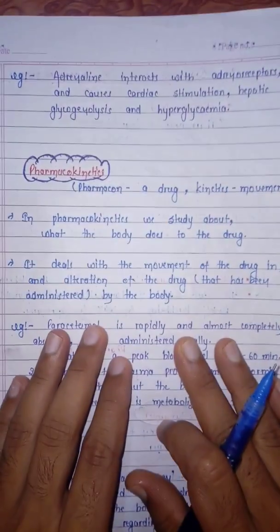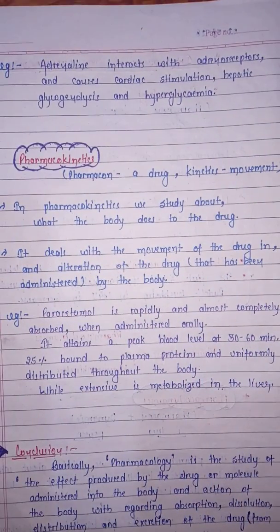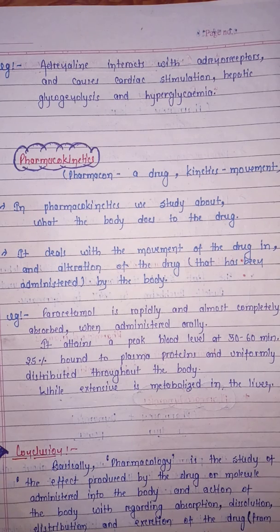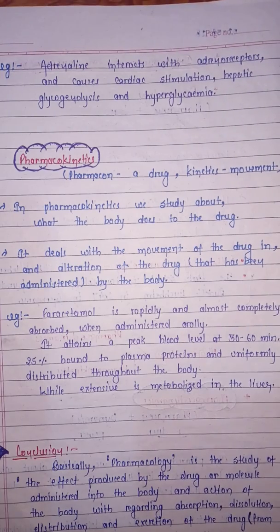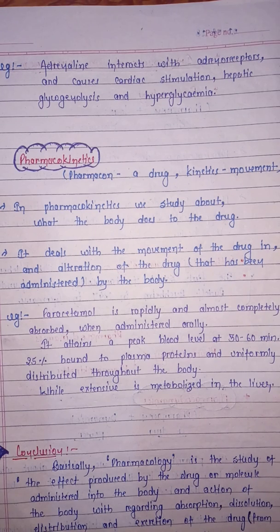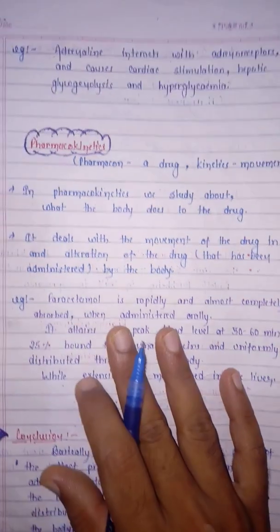To understand it with an example: adrenaline, when taken, interacts with adrenoreceptors and causes cardiac stimulation, hepatic glycogenolysis, and hyperglycemia. Here we have studied what the drug does to the body — that is pharmacodynamics.